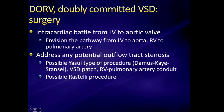To correct a doubly committed VSD, we require an intracardiac baffle from the left ventricle to the aortic valve, envisioning a pathway from the LV to the aorta and pulmonary artery. You have to be careful about intervening AV valve tissue and the position relative to the VSD, with potential for significant outflow tract narrowing. One might consider other surgical strategies such as a USUI-type procedure or a STELI procedure, in which case you would ligate the pulmonary artery and do an RV-to-PA conduit.